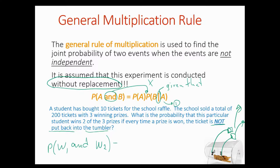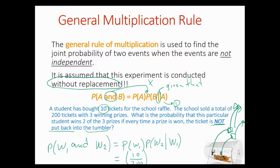Without replacement: the probability of winning the first prize times the probability of winning the second prize given that the first prize was already won. The probability of winning one prize — we have 10 tickets out of 200 in the raffle. If we win that ticket and they keep it out, then the second time around we have nine tickets out of 199. So it's a little bit different than the one before.